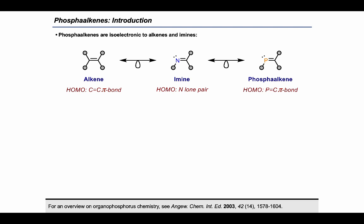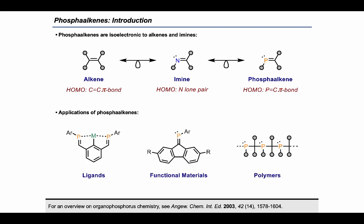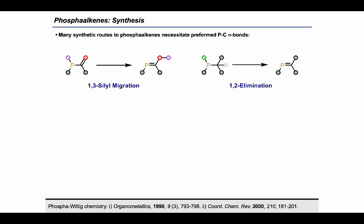Phosphoralkenes started off as laboratory curiosities but have now found a range of uses including as ligands for transition metal catalysts, in functional materials, or as monomers for main group polymers. With these growing applications, it is important to develop new synthetic strategies to access known and novel classes of phosphoralkenes. Many synthetic routes to phosphoralkenes necessitate preformed phosphorus-carbon single bonds.